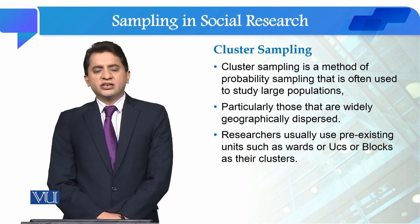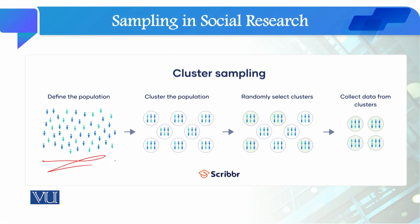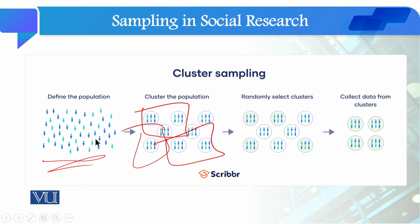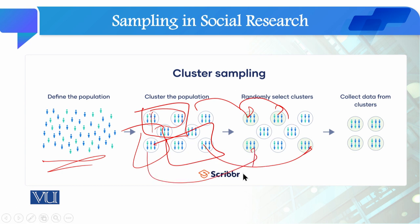So cluster sampling works as follows: our population — for example, we are doing a study of youth aged 18 to 25 studying in medical universities of Pakistan. We then form clusters of medical universities, for instance those in Punjab, Sindh, or KPK. From those clusters, if there are three clusters in Punjab, we randomly select one or two; from Sindh, randomly select one; and from KPK, randomly select one.